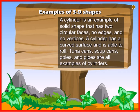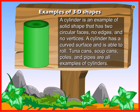Examples of 3D shapes: A cylinder is an example of a solid shape that has two circular faces, no edges and no vertices. A cylinder has a curved surface and is able to roll. Tuna cans, soup cans, poles and pipes are all examples of cylinders.